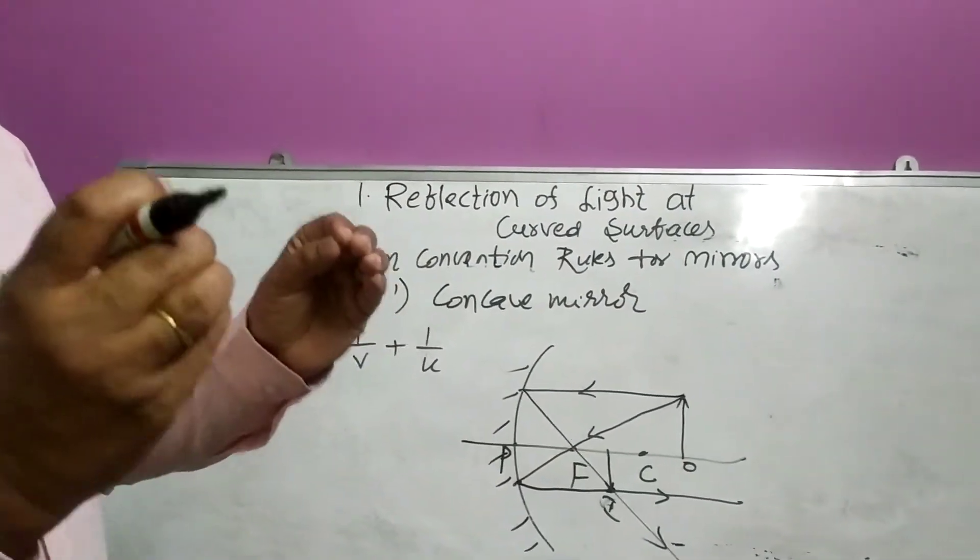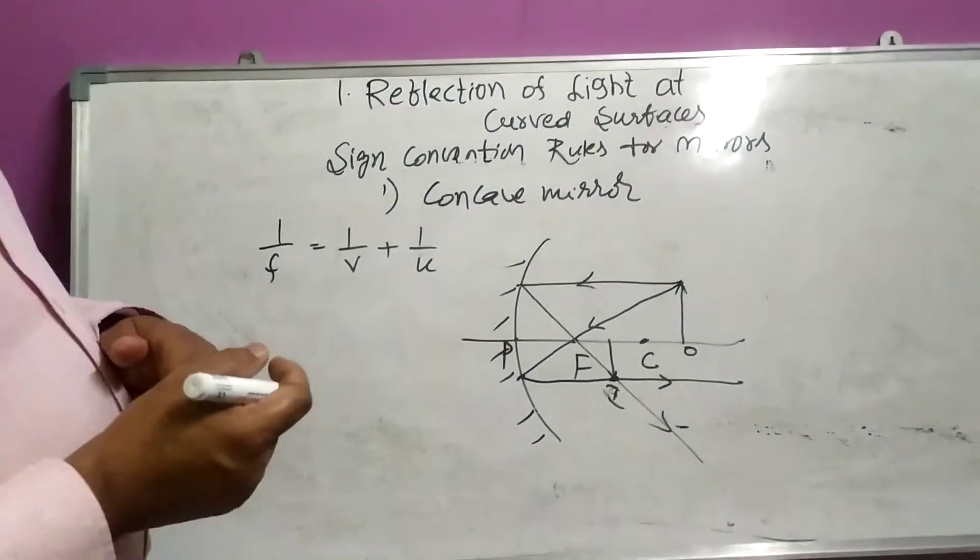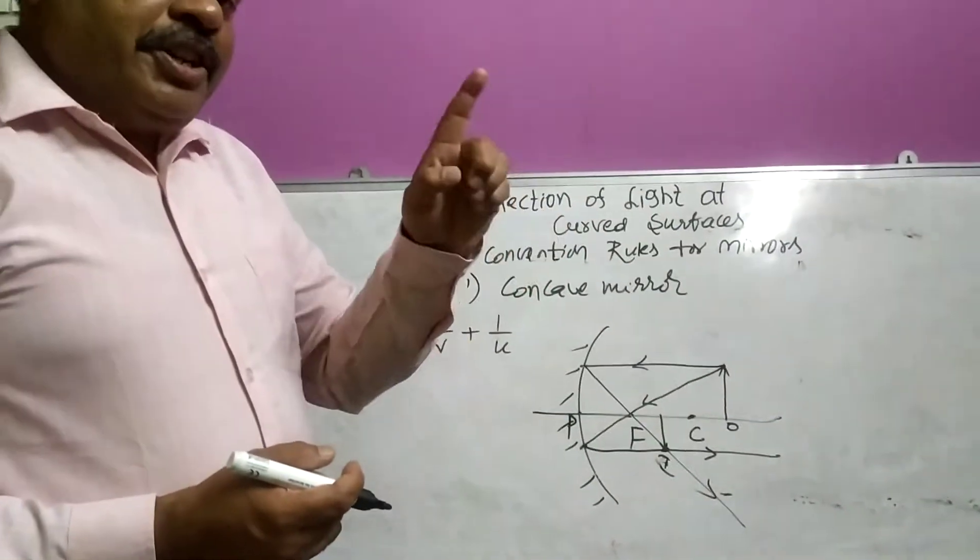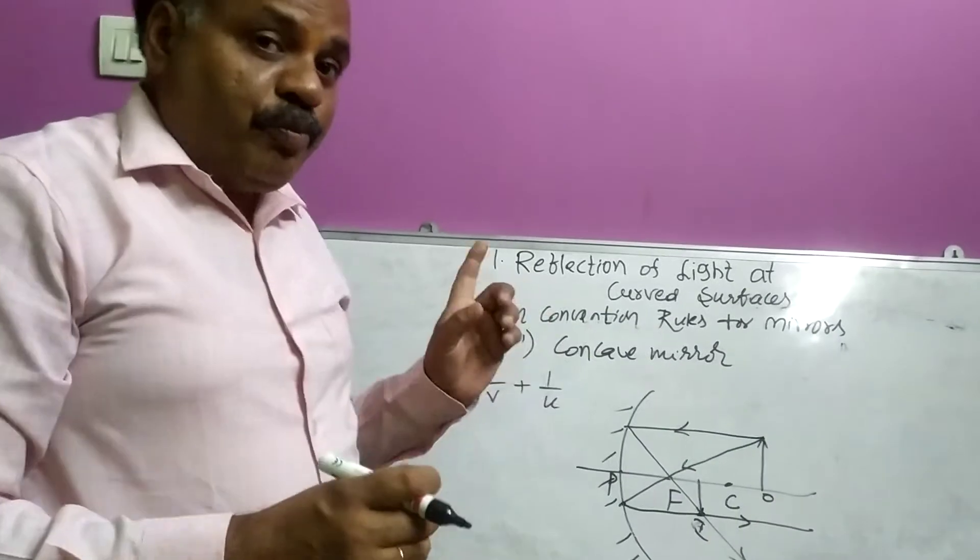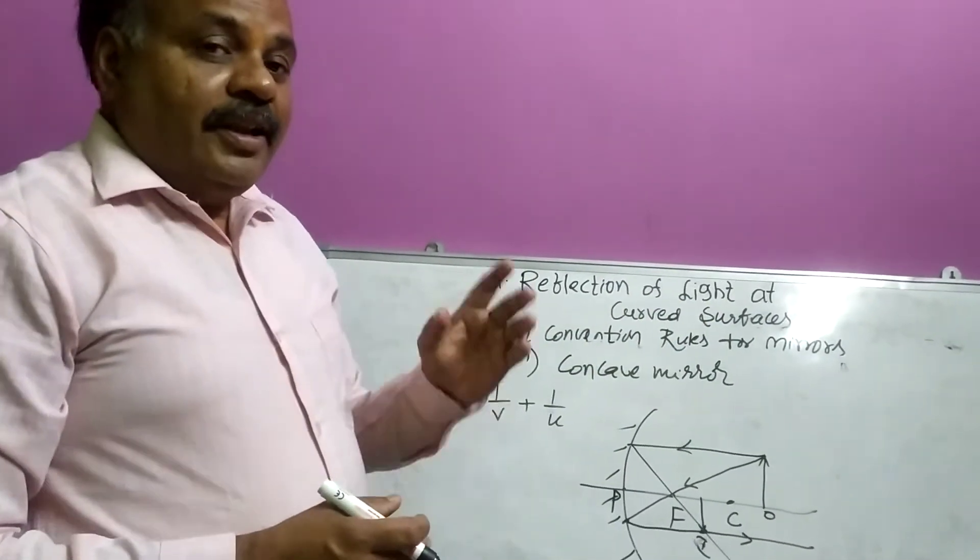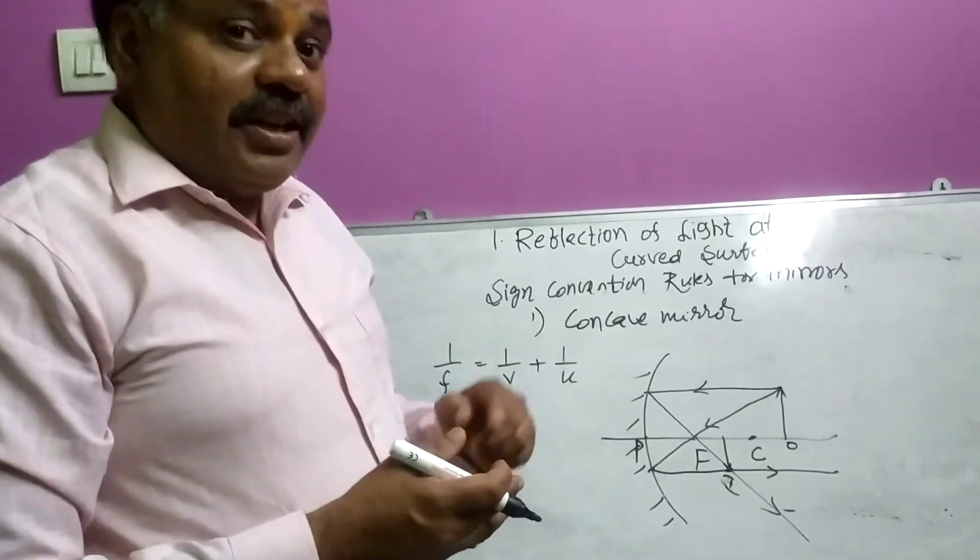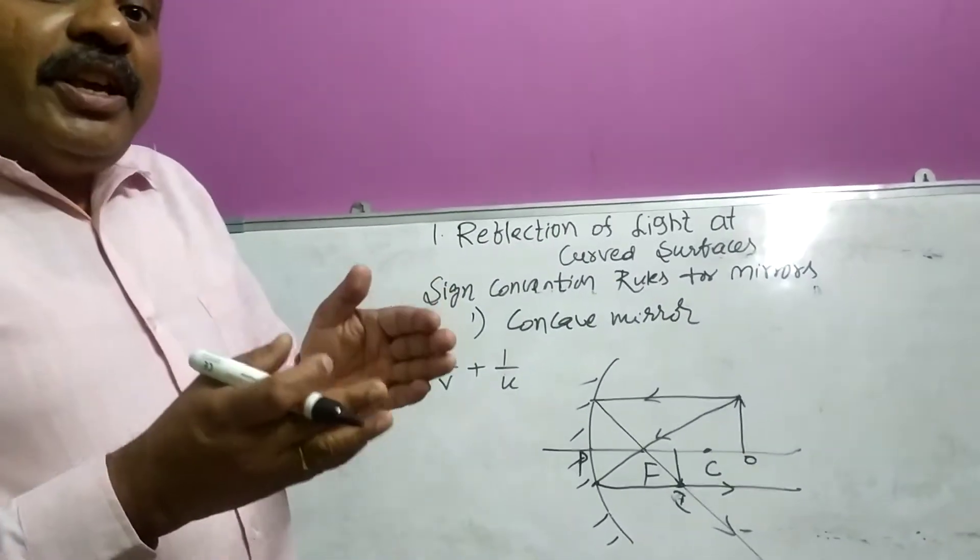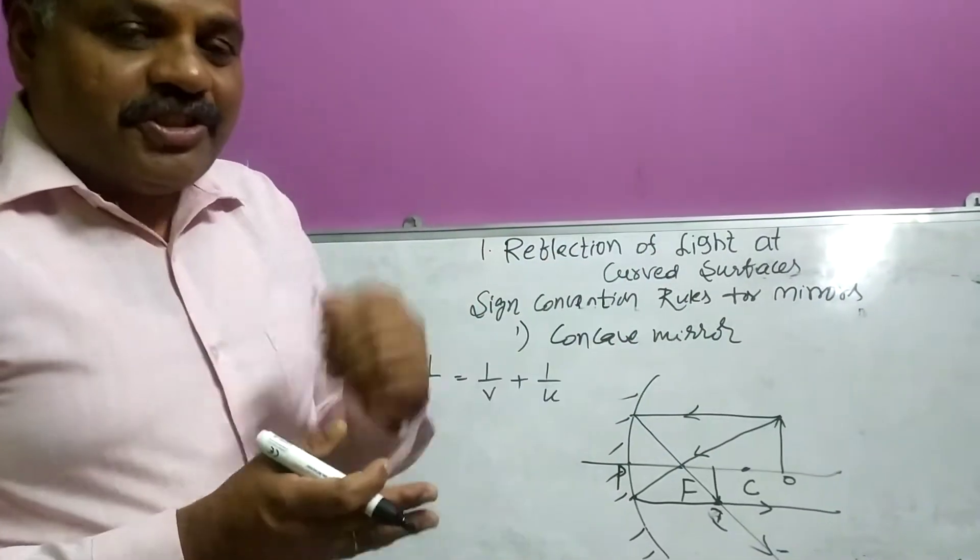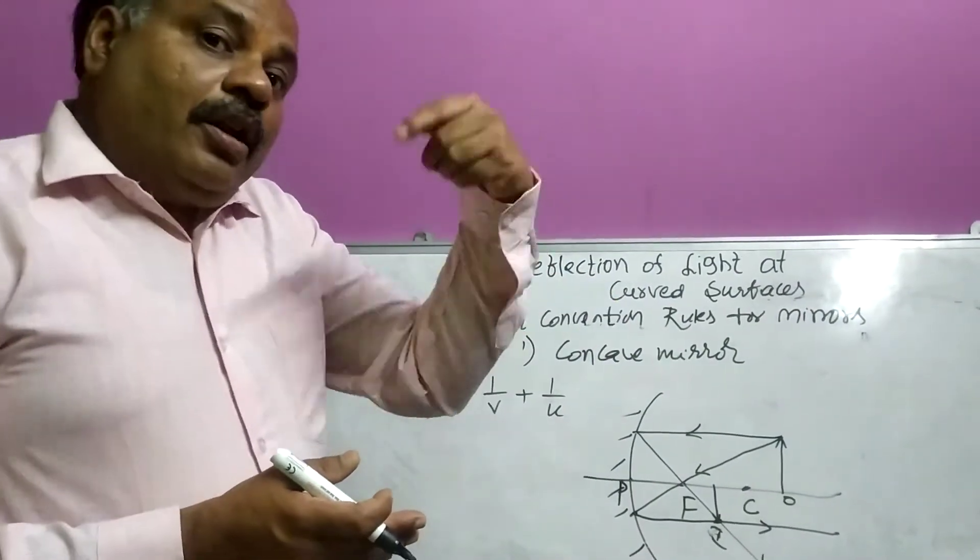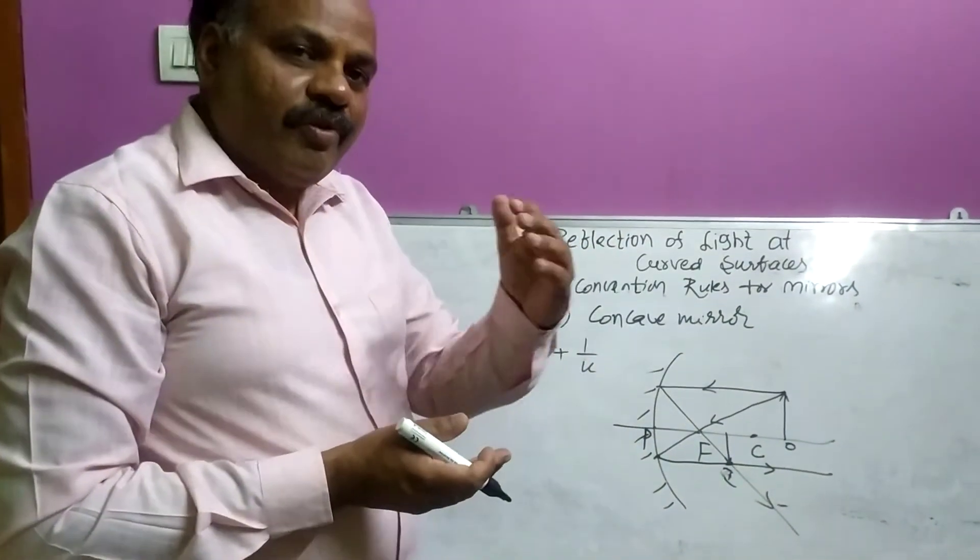Now, we apply the sign convention rules for this. We know sign convention rules. First rule is, every distance must be measured from pole. Second rule, the direction of the distance and direction of the incident ray. If they are in same direction, it is taken as positive. If both are in opposite direction, it will be taken as negative.